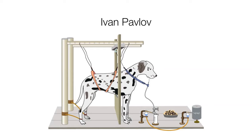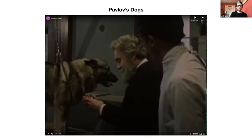Audience members responded: conditioning, conditioned response, physical conditioning, a rat rewarded with food for behavior, training dogs to salivate when a bell rang — classical conditioning. That's exactly right. Let me show you a short video that explains it.